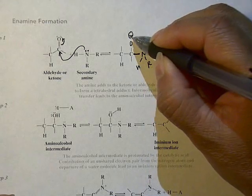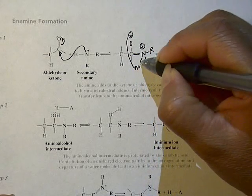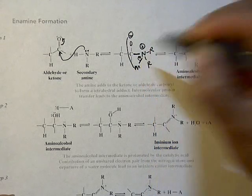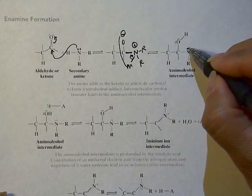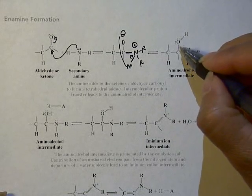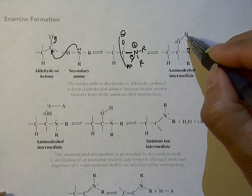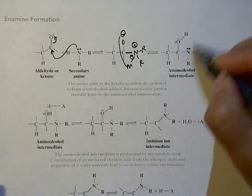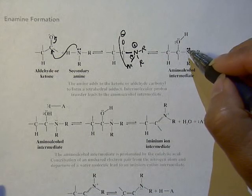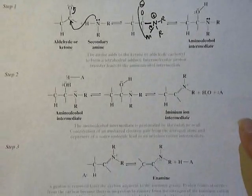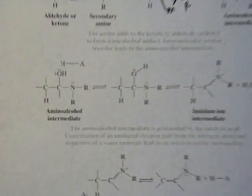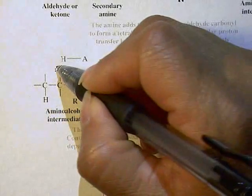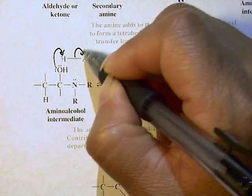Then the oxygen O minus is going to grab the proton, give back the lone pair. So there's the lone pair on the nitrogen, and notice the hydrogen has transferred over to the oxygen now. Here's the neutral intermediate.